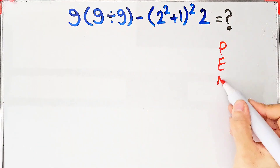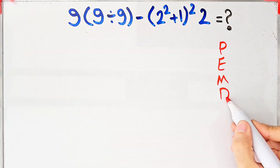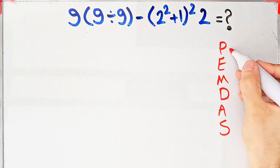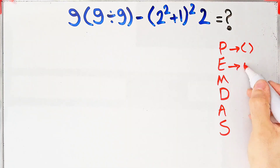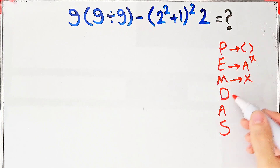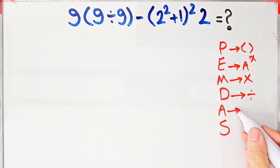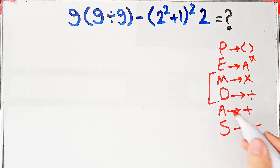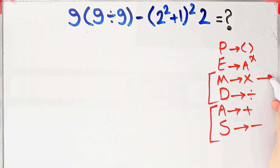PEMDAS shows the priority of mathematical operations, and if you don't pay attention to this rule you get the wrong answer. P stands for Parentheses, E stands for Exponent, M stands for Multiplication, D stands for Division, A stands for Addition, and S stands for Subtraction. Multiplication and division have the same level of priority, and addition and subtraction have the same level of priority. When we have both in an expression, we start from the left.